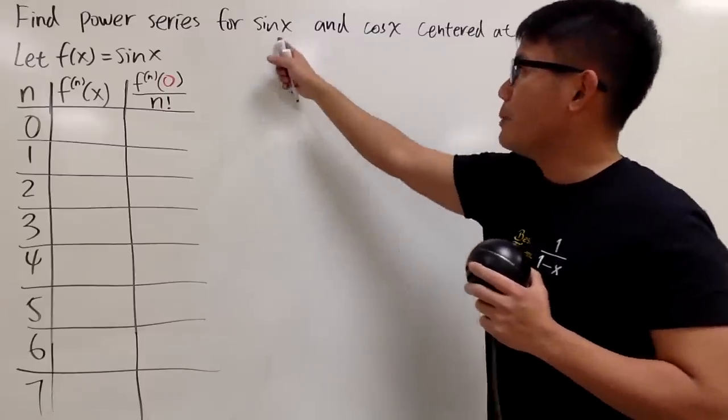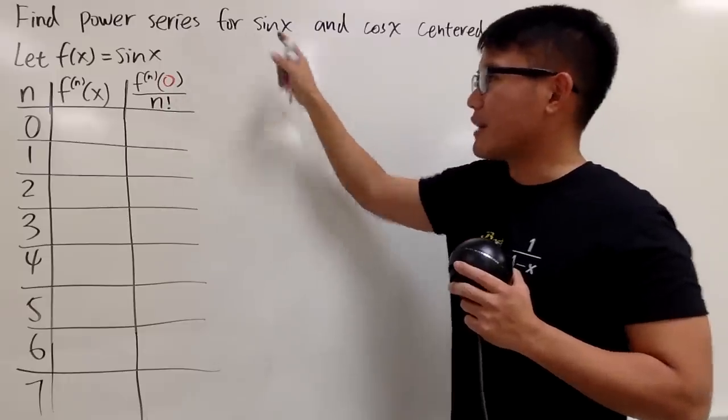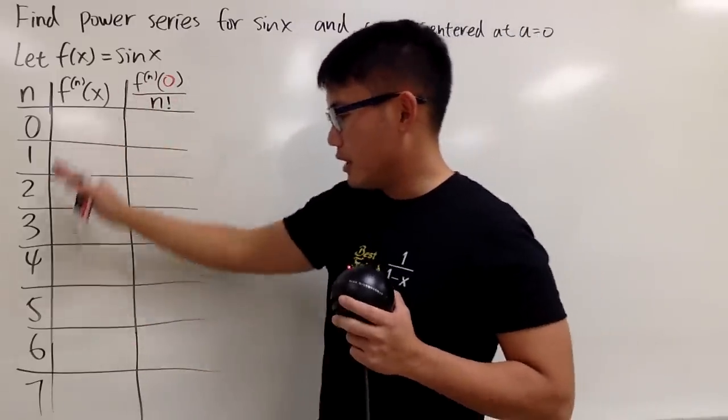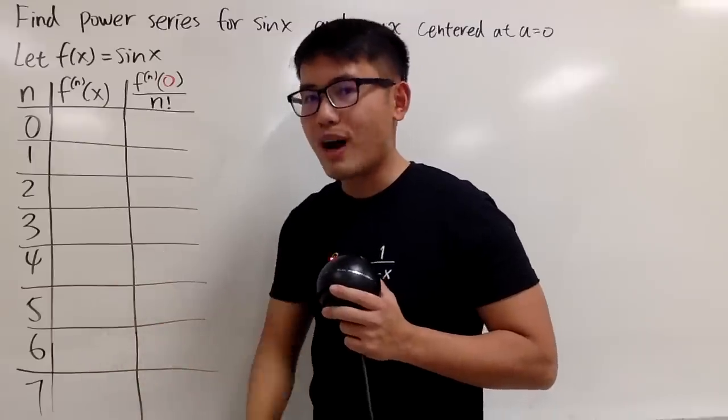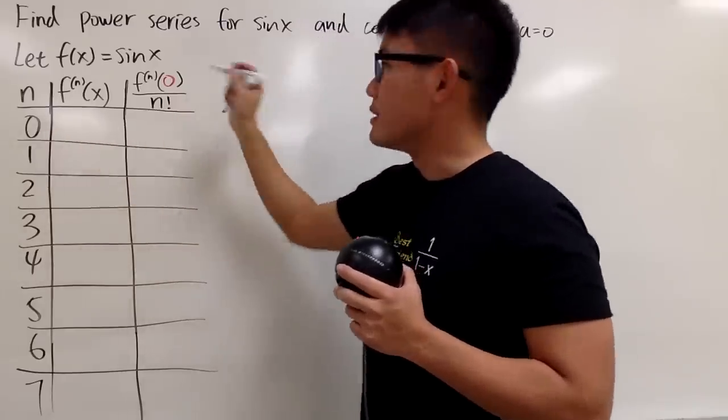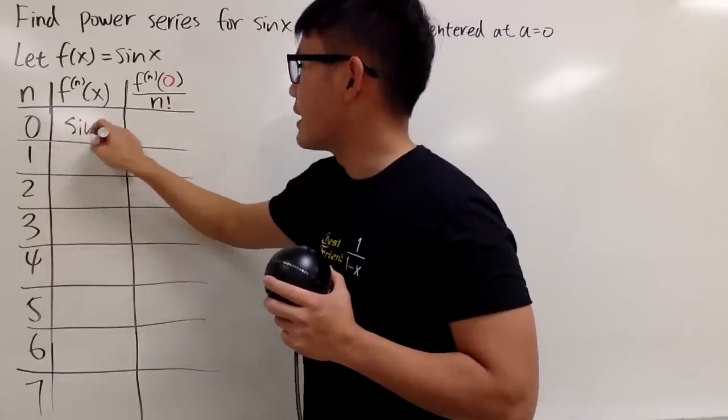Anyway, I will be focusing on getting a power series expansion for sin x first. So you should have the table right here. This time, though, we need a little bit more entries. You'll see why. I will have the zeroth derivative, namely the function itself. So I'll just start it at sin x.